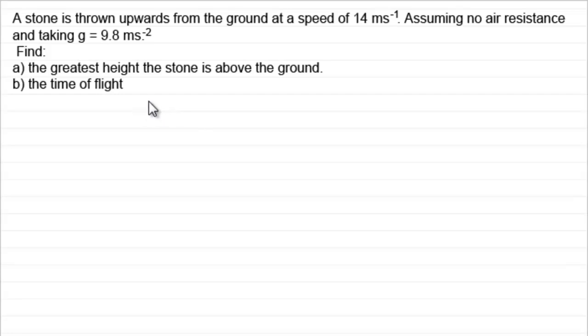So how do we do a problem like this? Well, what we need to do is a little sketch first of all. Just draw the ground and we've got the particle being projected up from the ground with a speed of 14 meters per second. We'll have our particle drawn in as well. The particle is going to clearly rise into the air, instantaneously come to rest and then is going to come back down again.